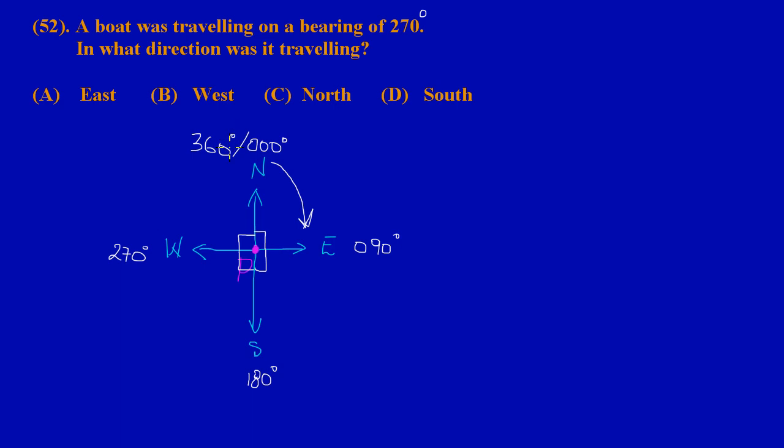Now basically what they're asking here: if a boat was traveling on a bearing of 270 degrees, in what direction was it traveling? So if the boat started at the point P and it's traveling on a bearing of 270 degrees, it simply means it's starting from the north line and it's going around, and it's not stopping until it has stopped on the line that measures 270 degrees. If you notice, so obviously the boat would be traveling in a westerly direction, or it is going west, and that would be option B.